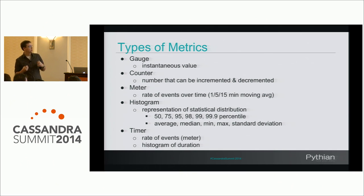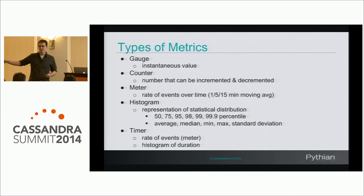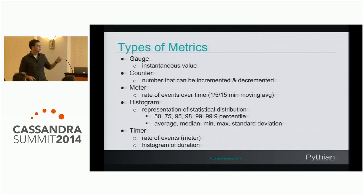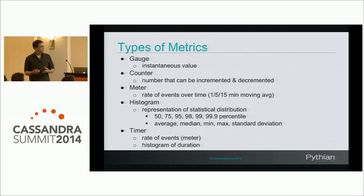Histograms are useful for things like tracking payload sizes of requests. If you just keep max, min, and average, the max of two megs can throw off the average a lot. In reality, the 99th percentile might be 100 bytes — you just have one huge outlier. Having this statistical distribution is really helpful to understand outliers and how the data actually looks. And then there's a timer, which is a combination of a meter of events and a histogram of the duration.